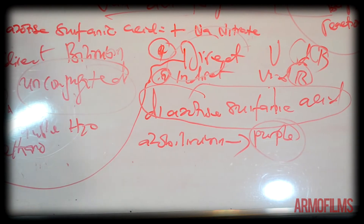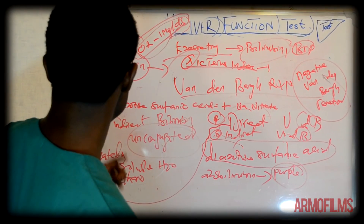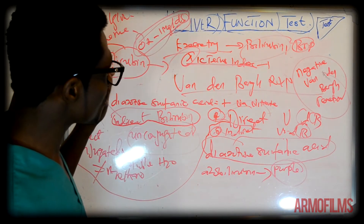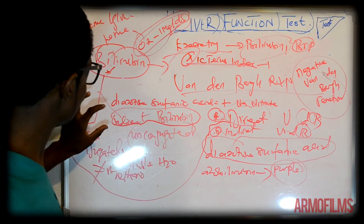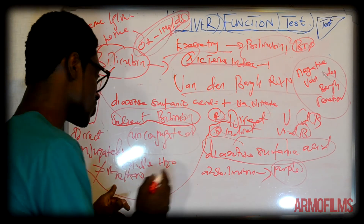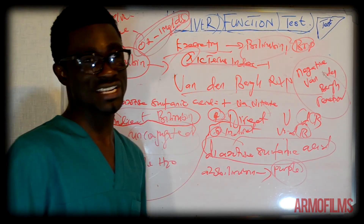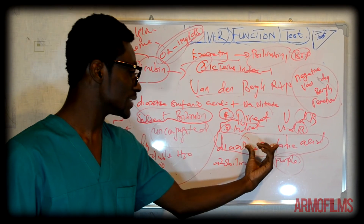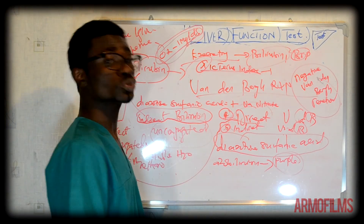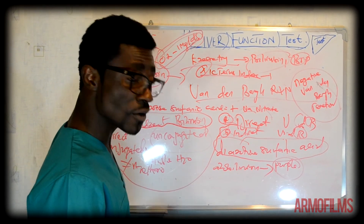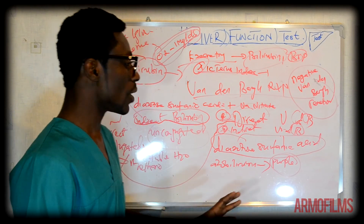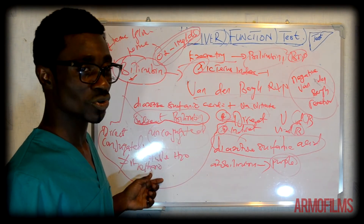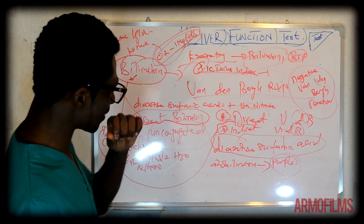In the indirect VDB reaction, because indirect bilirubin is not soluble in water, we first have to dissolve it in methanol. This makes it a methanol-dependent pathway. Once dissolved in methanol, the bilirubin becomes soluble and can react with the van den Bergh reagent. It also forms the same product — azobilirubin — which is purple in color. The main difference between the direct and indirect VDB reactions is just the involvement of dissolution in methanol.